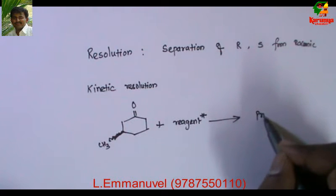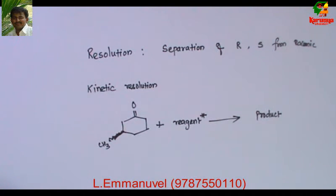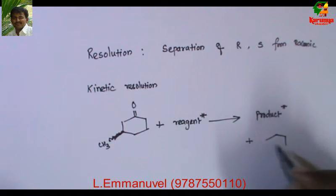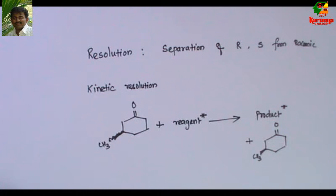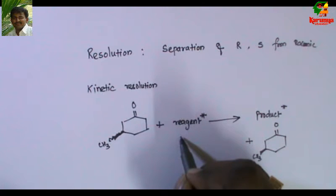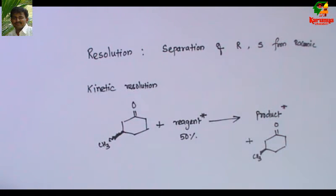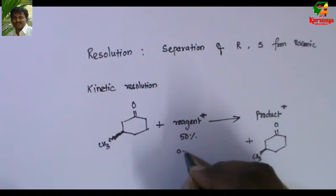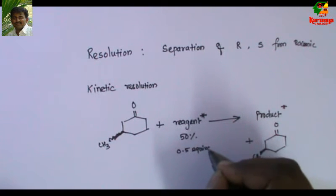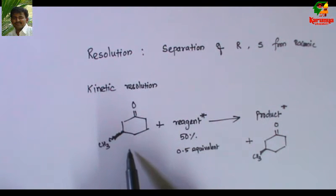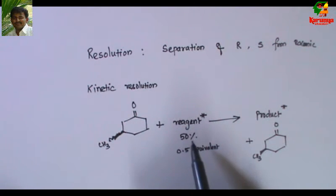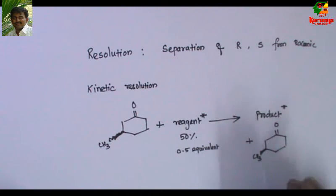The product will be chiral, and the other isomer will be left as such, and it becomes chiral. In this method, we add only 50% of the chiral reagent — 0.5 equivalents. If you take one mole of this compound and 0.5 mole of the chiral reagent, that 0.5 mole will react with 0.5 mole of the substrate to give the product, and the remaining will be left as such.